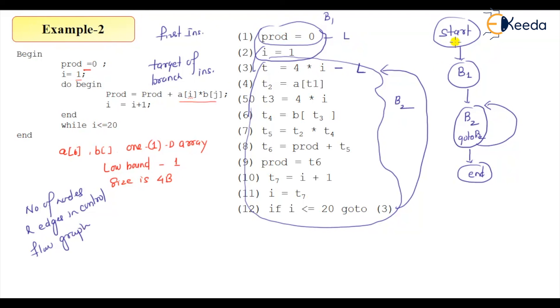So that we can count here - 1, 2, 3, 4 nodes are there. And 1, 2, 3, and there are 4 edges.